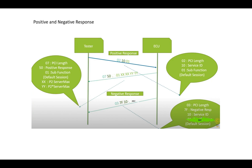For a negative response, it will be PCI length 0x03, followed by 0x7F — the negative response ID — followed by service ID 0x10, followed by the NRC such as 0x12, 0x13, 0x22, or 0x78. Note: the PCI length in the positive response example should be 0x06, not 0x07, since there are six bytes total.